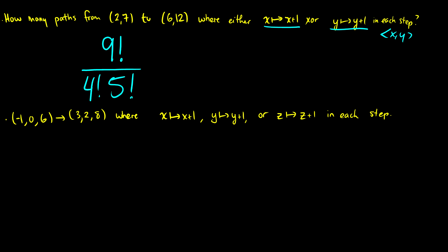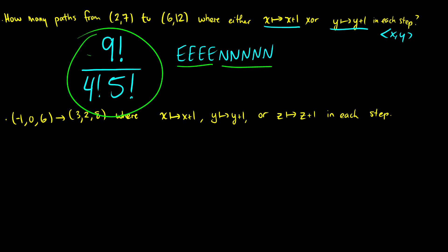This is the same thing as finding the number of permutations of E, E, E, E, N, N, N, N, N — since we have to move four to the east and five to the north. That's the same as picking four E's and five N's and finding the number of permutations, which is 9 factorial over 4 factorial divided by 5 factorial.